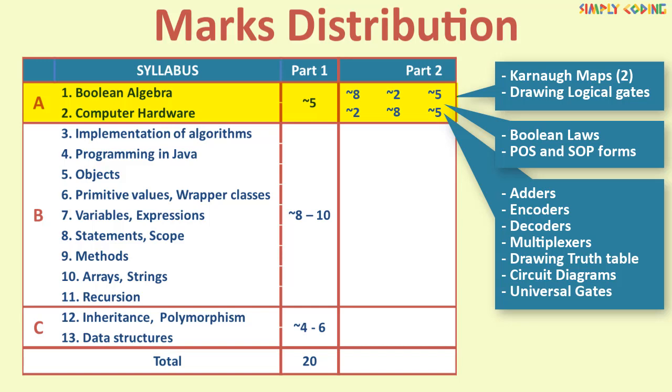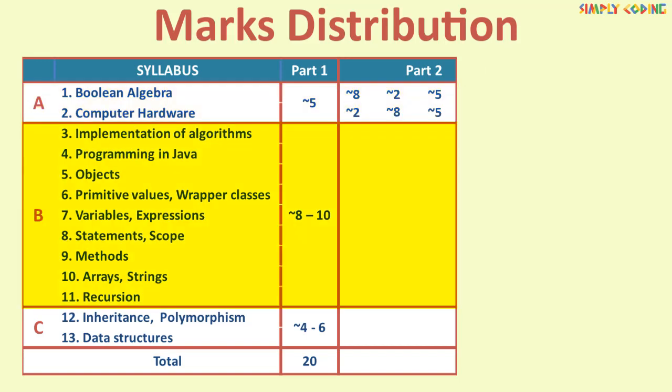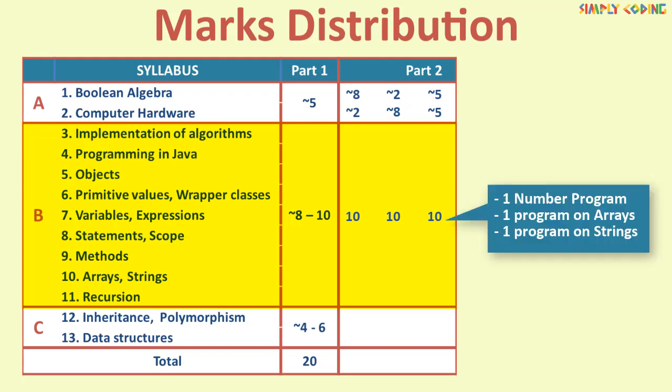In section B, there are 3 programs of 10 marks each and you have to attempt 2. The pattern for these questions has remained the same over last 3 years. One program is on different type of numbers like Armstrong number, perfect number etc. One program is on arrays and one program is on string.